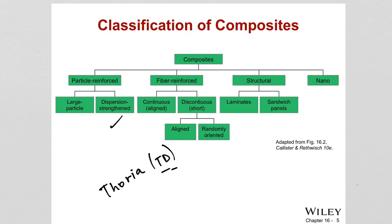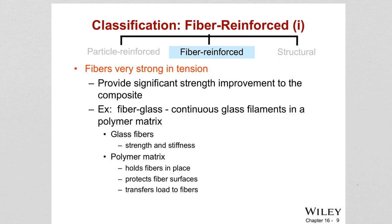Fiber-reinforced composites: fibers are very strong in tension and therefore provide strength to the composite. One example is fiberglass — continuous glass filaments in a polymer matrix. The glass fiber is the strong and stiff dispersed phase, while the polymer matrix holds the fiber in place, protects the fiber surfaces, and transfers load to the fibers. Because the fibers are the stronger phase, they carry the stresses instead of the matrix.